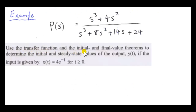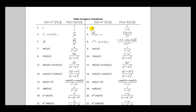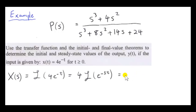Use the transfer function and the initial and final value theorems to determine the initial and steady-state values of the output y(t) if the input is given by x(t) = 4e^{−t}, where t ≥ 0. We need X(s), so we take the Laplace transform of x(t). The Laplace transform of e^{at} is 1/(s − a), where in our case a = −1. So we have 4 times 1/(s − (−1)), giving us X(s) = 4/(s + 1).